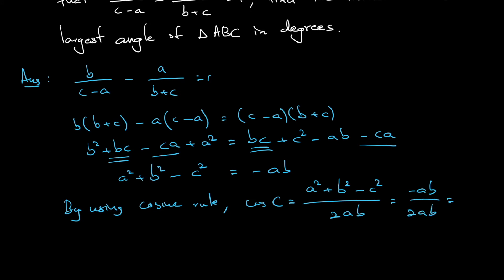So cosine C would in fact equal to -1/2. Okay, so cosine C is equal to -1/2. So that means that angle C is 120 degrees. And because the sum of the three angles in a triangle must be 180, so if we know one of them is 120 degrees, so this must be the largest angle.